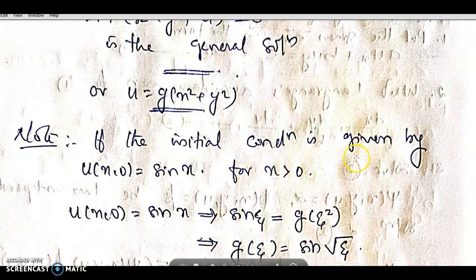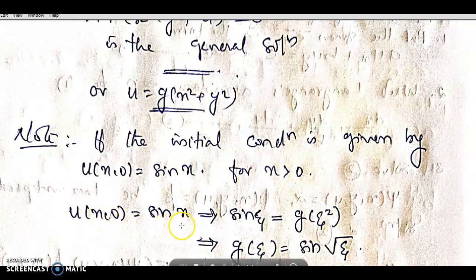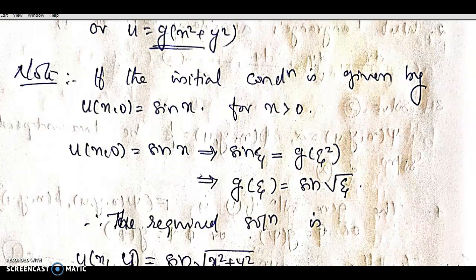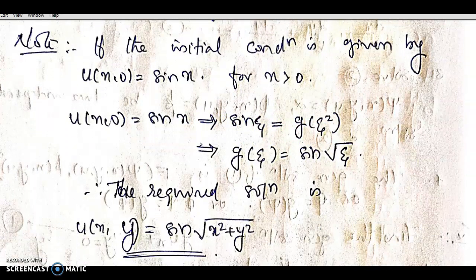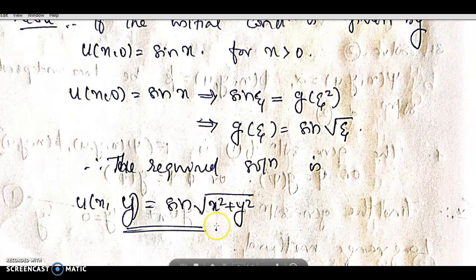If the initial condition is given by u(x, 0) = sin(x) for x > 0, then sin(x) = g(x²), which implies g(ψ) = sin(√ψ). Therefore the required particular solution is u(x,y) = sin(√(x² + y²)).